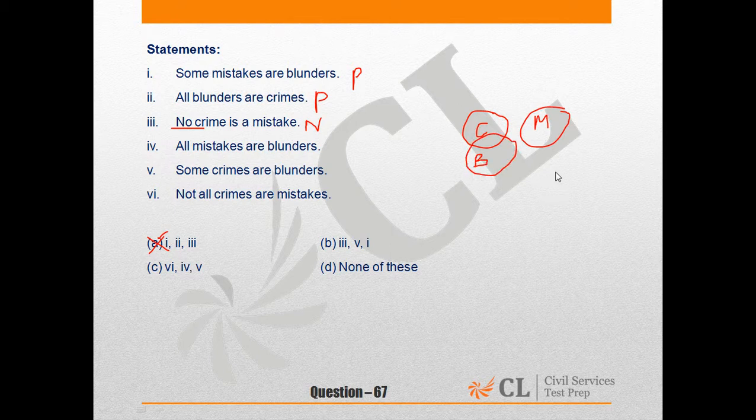My conditional statements are intact. Statement 1 says some mistakes are blunders. May be, may not be. We can't be sure. So because of insufficient data, this option is not correct.